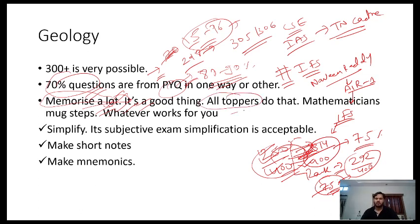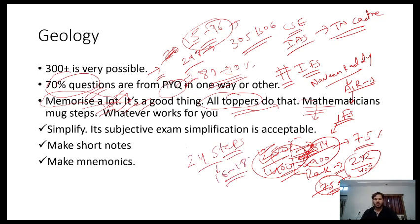Even toppers from other science subjects like mathematics memorize a lot — they have constraints of space and time, so if a problem normally takes 24 steps, they cut it short to 16 to 18 steps and memorize the steps in between. That is how they score a lot apart from other hard work. You can only memorize when you have very sound conceptual understanding, have done the classes well, made your notes, referred to standard textbooks, Googled the topics, seen a few videos, and have a good feel of the topic. Then you need to simplify your content.